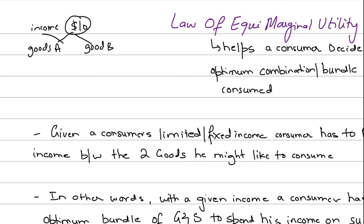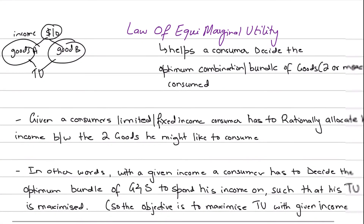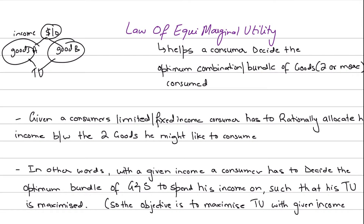If we want to buy some units of good A and some units of good B, how many units of each should we buy in order to maximize our total utility gained from both goods as a whole? Given a limited budget and two or more goods, how will a consumer optimize his bundle and act rationally? In that case, the law of equi-marginal utility provides some help.